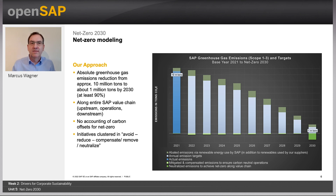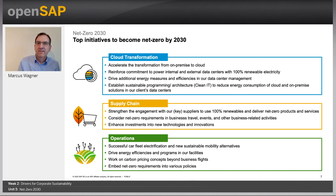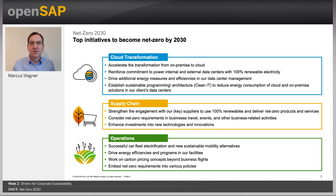Two examples. The greenhouse gas category 'purchased goods and services and capital goods' means all cradle-to-gate emissions in our supply chain, responsible for around 12% of our emissions. The greenhouse gas category 'use of sold products' means emissions caused by our own on-premise software solutions running in the data center environment of our customers, responsible for 84% of our emissions. In numbers, our net emissions in our own operations were 110,000 tons in 2021, while the entire greenhouse gas value chain emissions were 10 million tons — 90 times more.